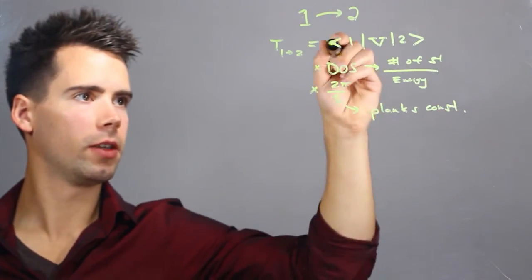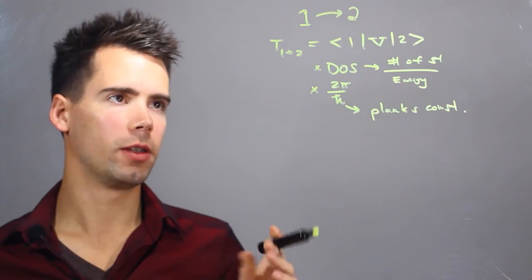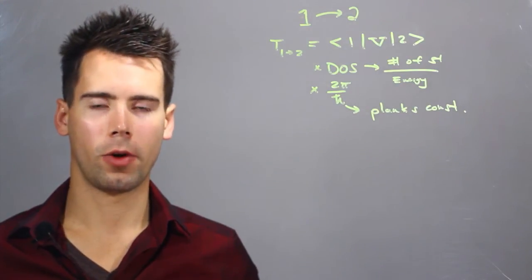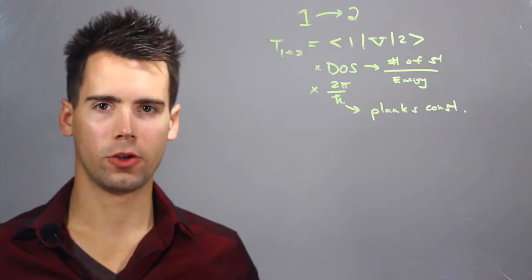So calculating each one of these separately, we can find the transition probability going from state 1 to state 2. I'm Reinald and this is how to estimate transition probability.